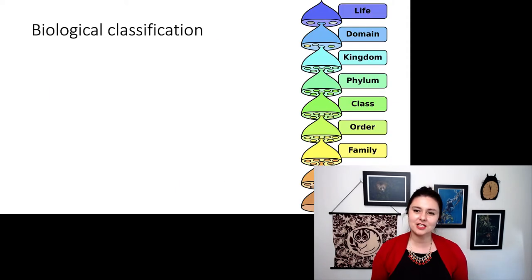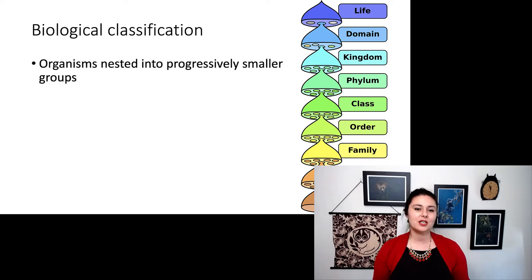When we're talking about all of this, though, it is helpful to talk about biological classification, because how we name things helps us organize it so we can understand it better. We've been talking about this a little bit already when we were talking about the different groups within primates. Now let's get a little bit bigger. So here we have organisms are nested into progressively smaller groups. It's just like the file folders that you can organize on your computer desktop.